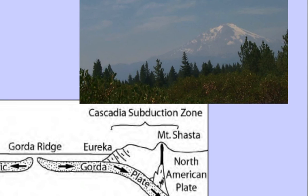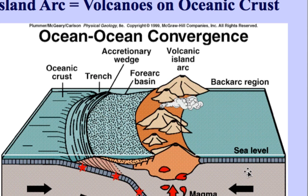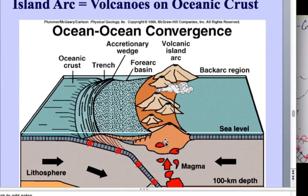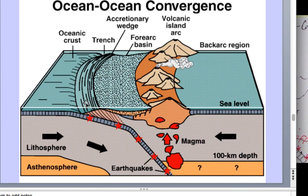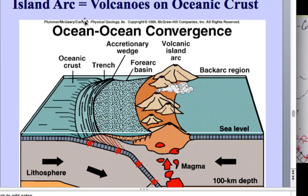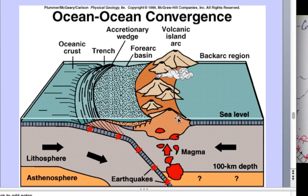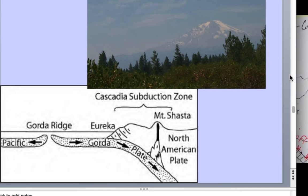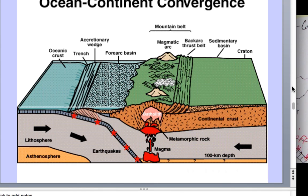For the ocean-to-ocean convergence, note that we have a much thinner oceanic crust—there's no batholith. But the same idea holds. We have the trench, the accretionary wedge. In this case, instead of being a magmatic arc, it is an island arc. Like Japan, the Aleutian Islands are good examples of island arcs. Examples of magmatic arcs would be the Andes and the Cascades.